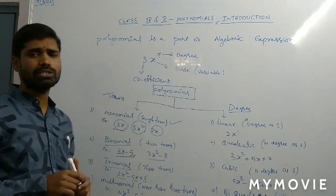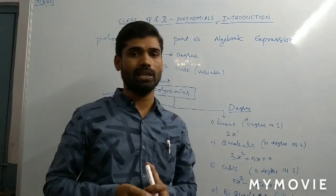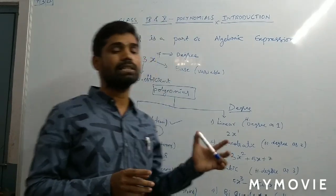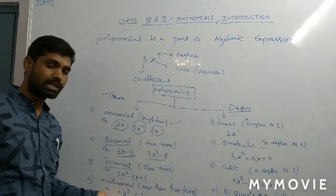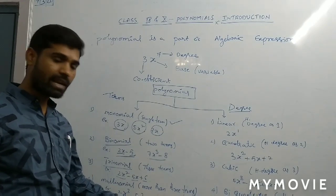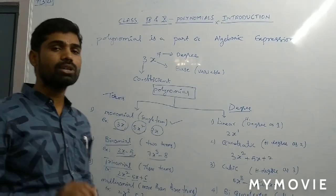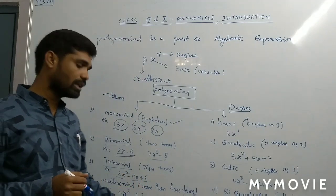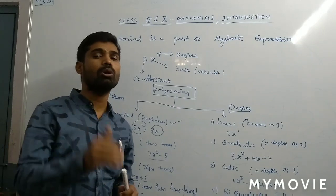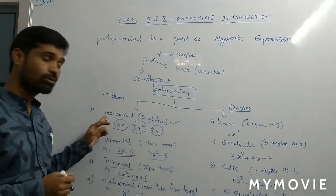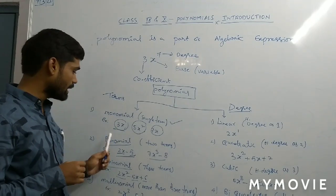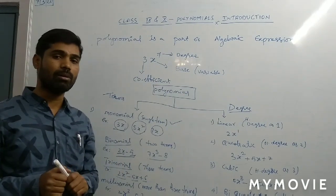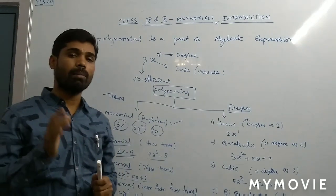Now the multinomial. Multi means more than three, meaning four terms, five, six, seven, whatever it is — more than three. That is called a multinomial. For example, 2x power 3 minus 5x power 2 plus 7x minus 9 — here we have to observe only the terms. It has 1, 2, 3, 4 — total four terms, which is more than three. So: single term is monomial, two terms is binomial, three terms is trinomial, and more than three terms is multinomial.